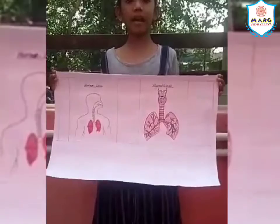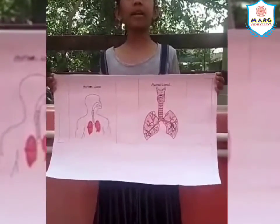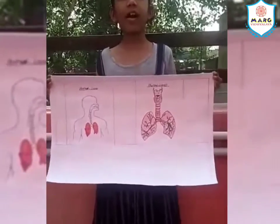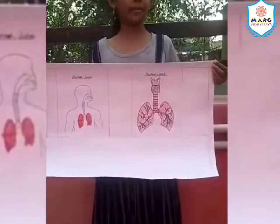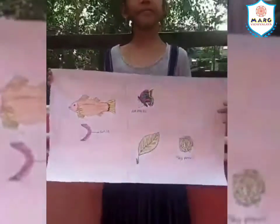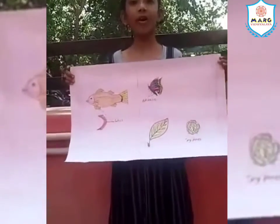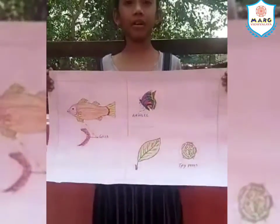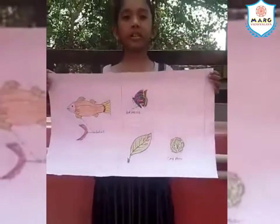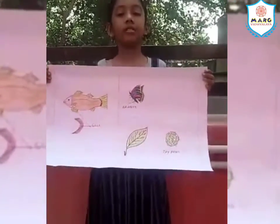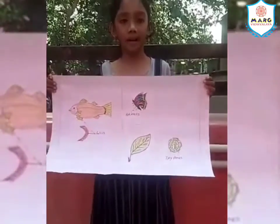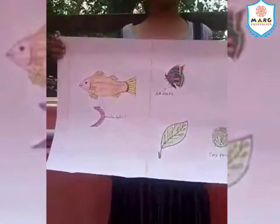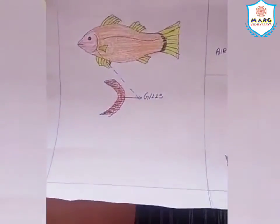Animals like horse, tiger, monkey and gorilla breathe through their lungs. Fish have gills which help them to breathe in water. Insects like ants, cockroach, flies and butterflies have tiny holes on their body called spiracles which help them to breathe.